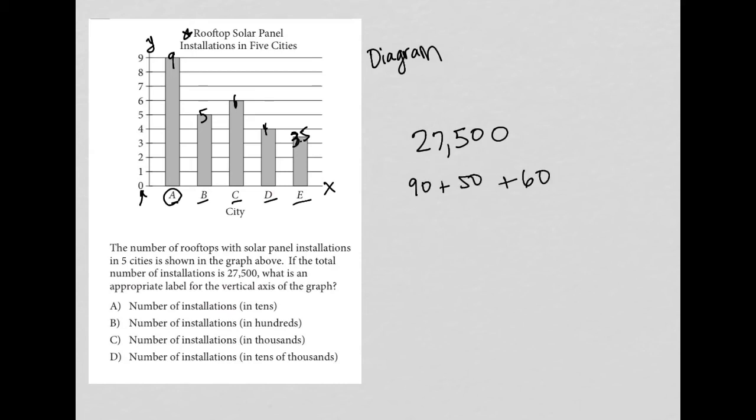That means city A would have 90, and then plus 50 from city B, plus 60 from city C, plus 40 from city D, and instead of 3.5, that would become 35.